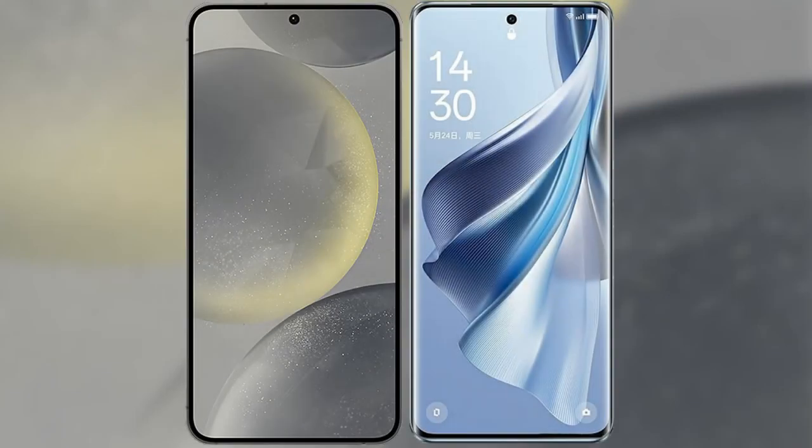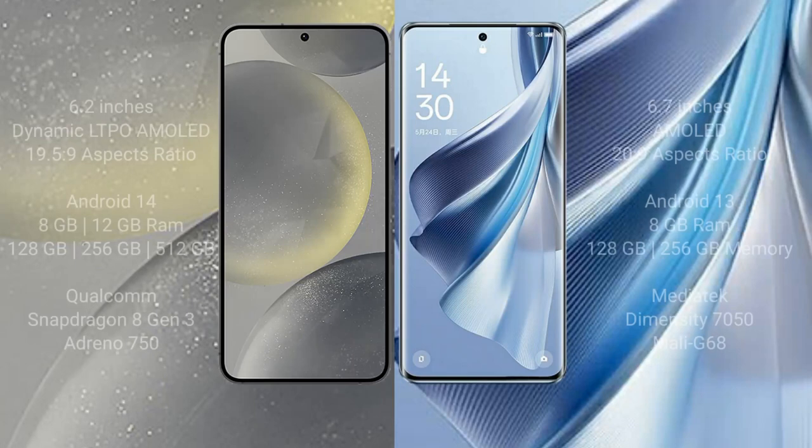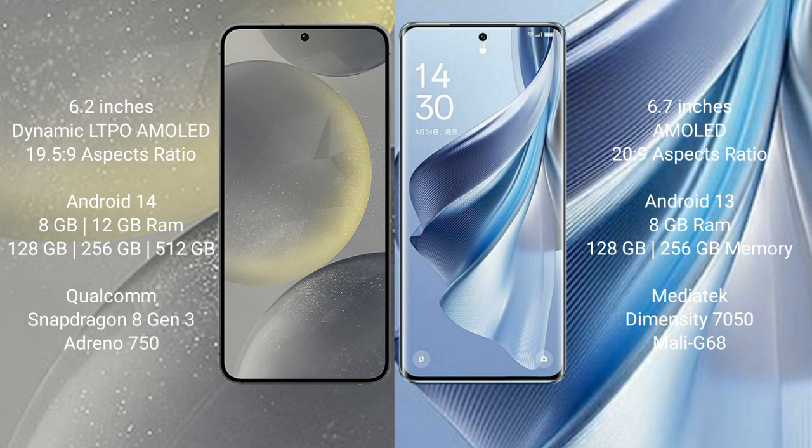I will compare the new Samsung Galaxy S24 with the Oppo Reno 10. Samsung Galaxy S24 comes with a 6.2-inch Dynamic LTPO AMOLED display, while the Oppo Reno 10 comes with a 6.7-inch AMOLED display.